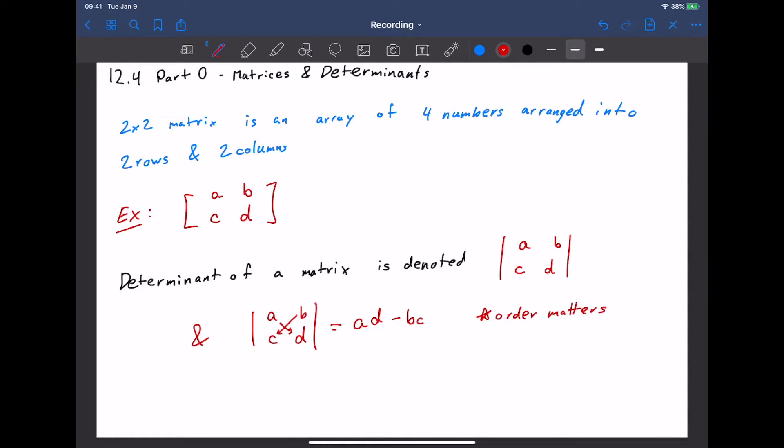So an example of a real situation: the determinant of the matrix 2, 1, negative 6, 4, we would do 2 times 4, which is 8, minus negative 6 times 1, or 14, and 14 will be the determinant of that 2 by 2 matrix.